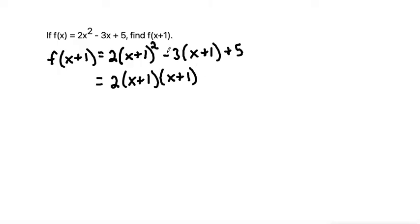I can go ahead and distribute the negative 3. Negative 3 times x makes negative 3x, and then negative 3 times 1 is negative 3. Then bring down my plus 5.